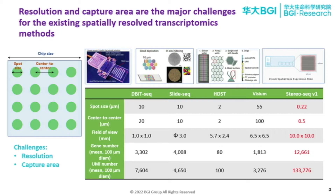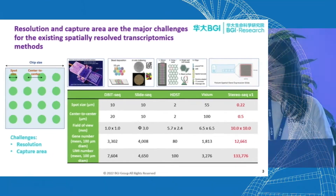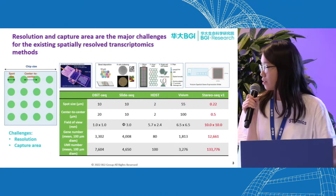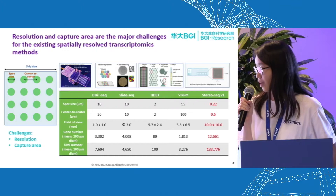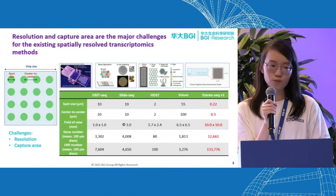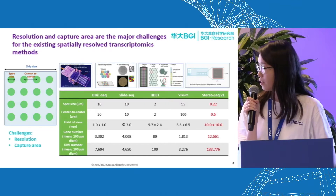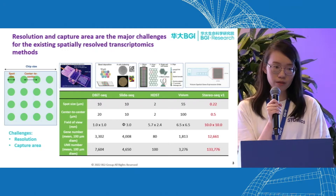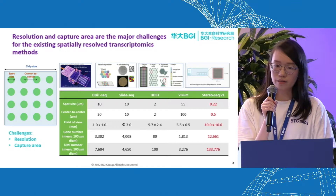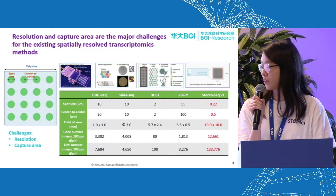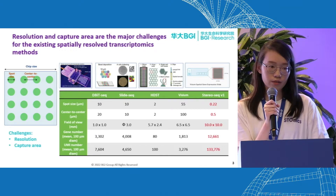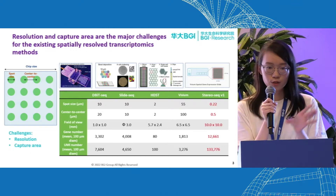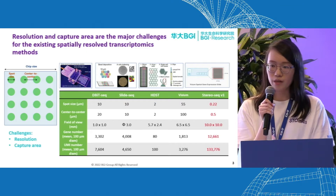We also have the barcoded-based probes or arrays — this is more of an unbiased capture method. These techniques also have their own challenges. For example, resolution: in some of the current technologies available, the capture spot size is quite big — often larger than a single cell — and you would also have a larger center-to-center distance, meaning there is a large empty gap where you can't really capture any information.